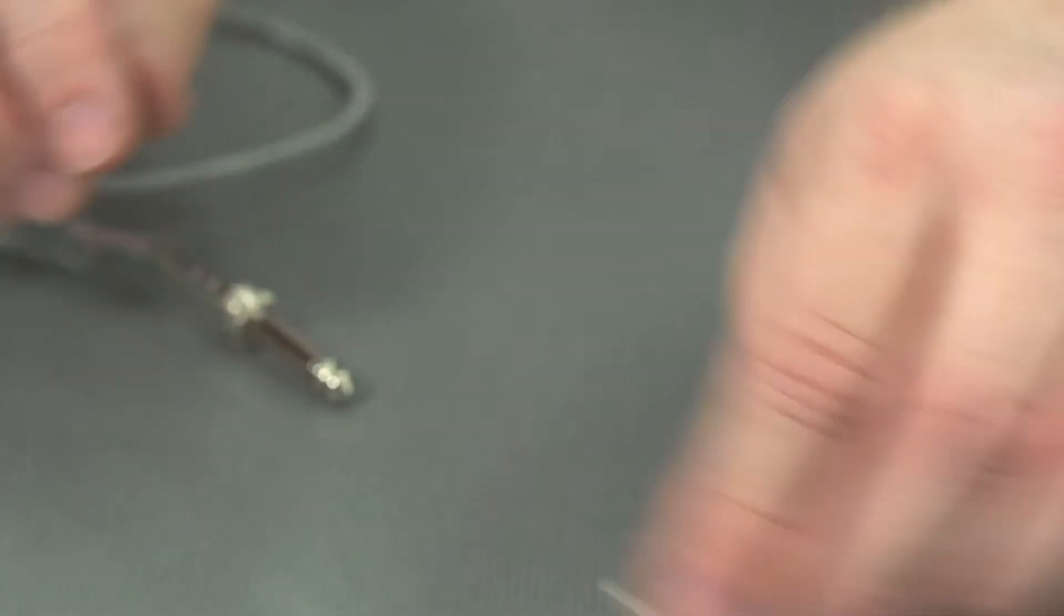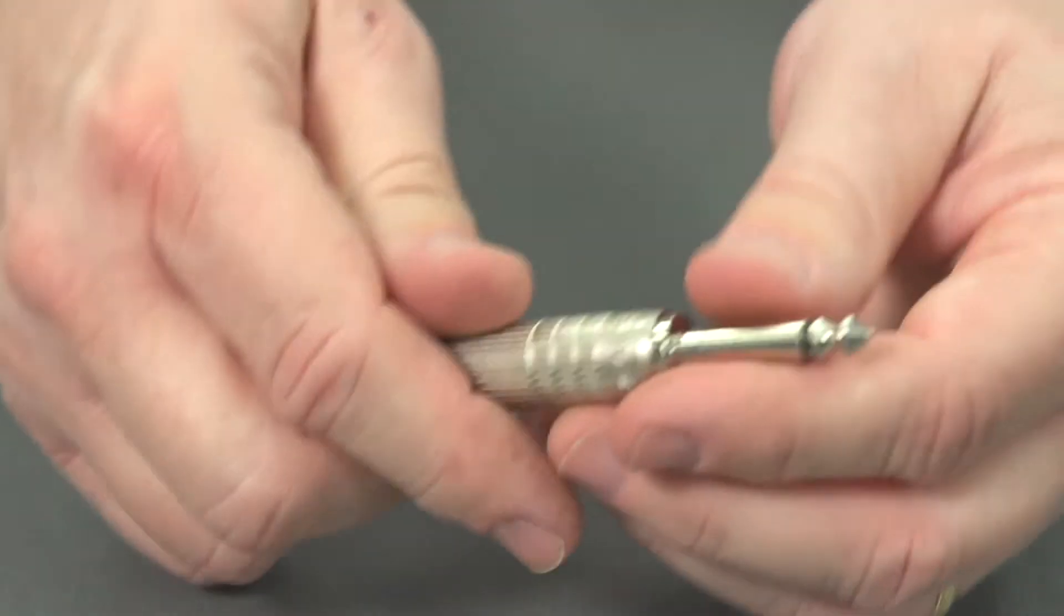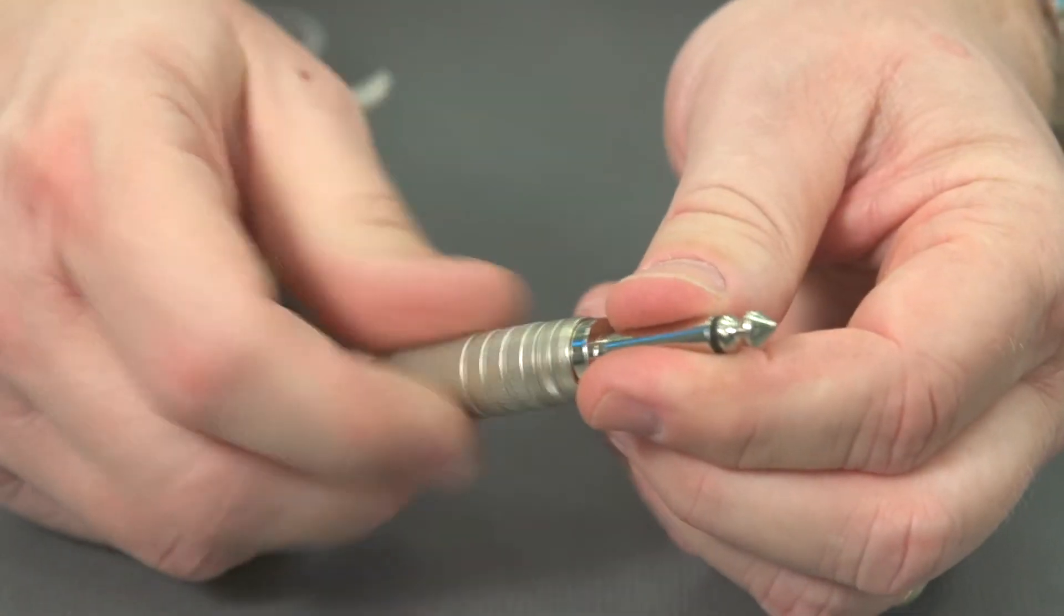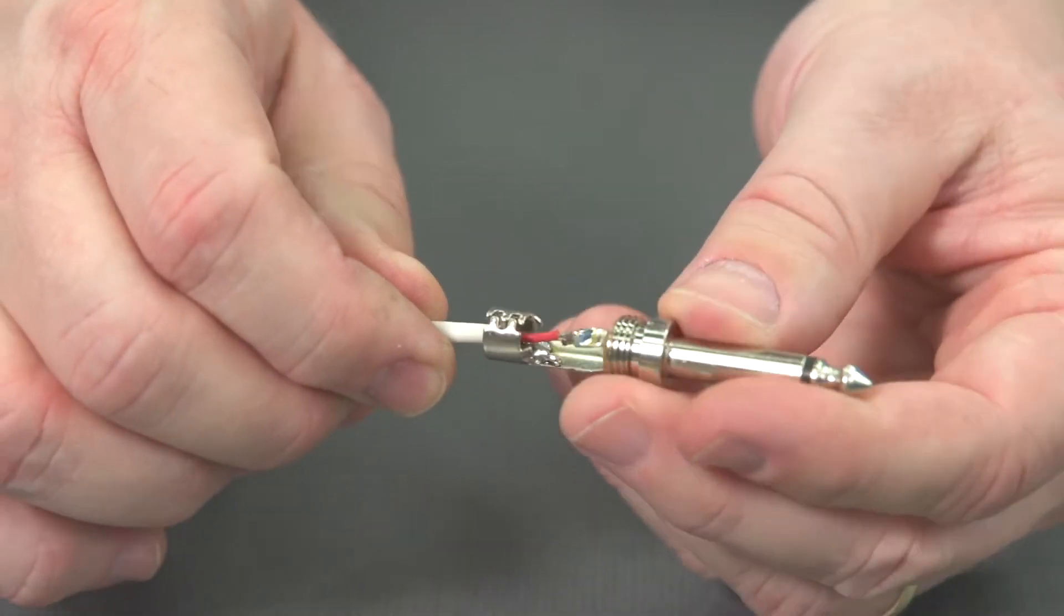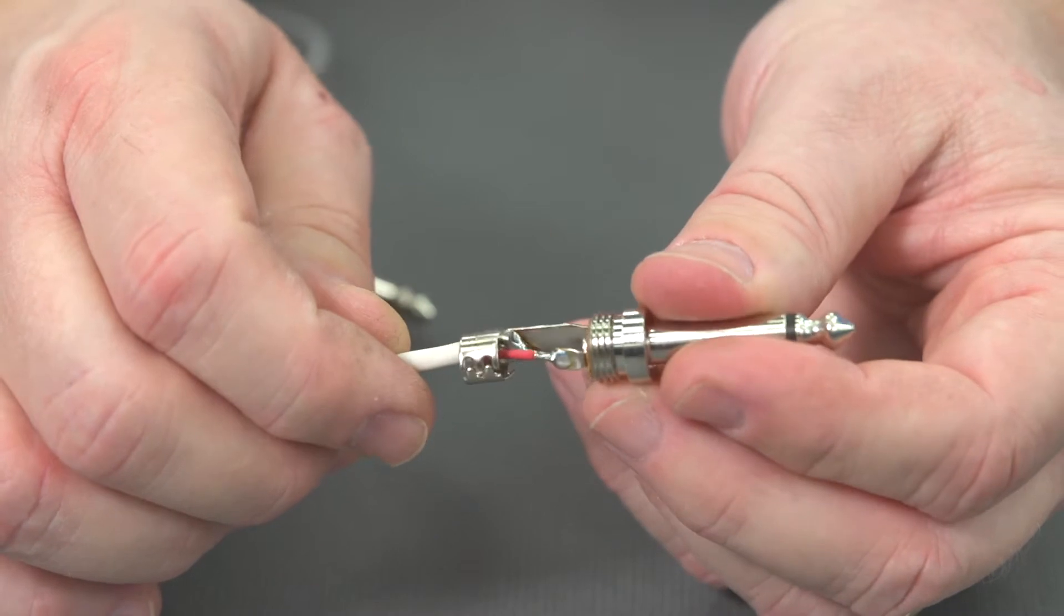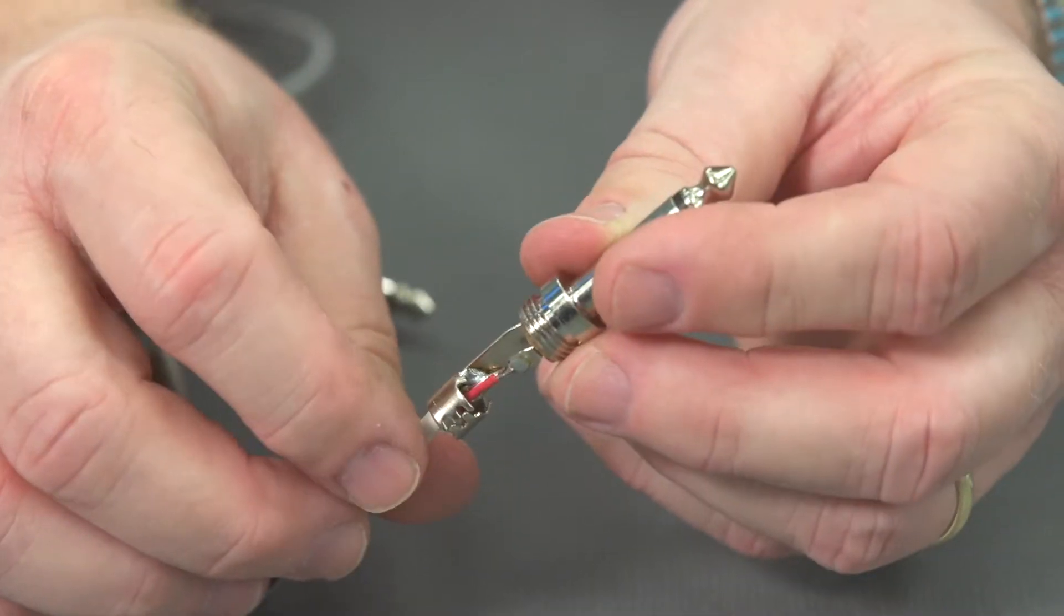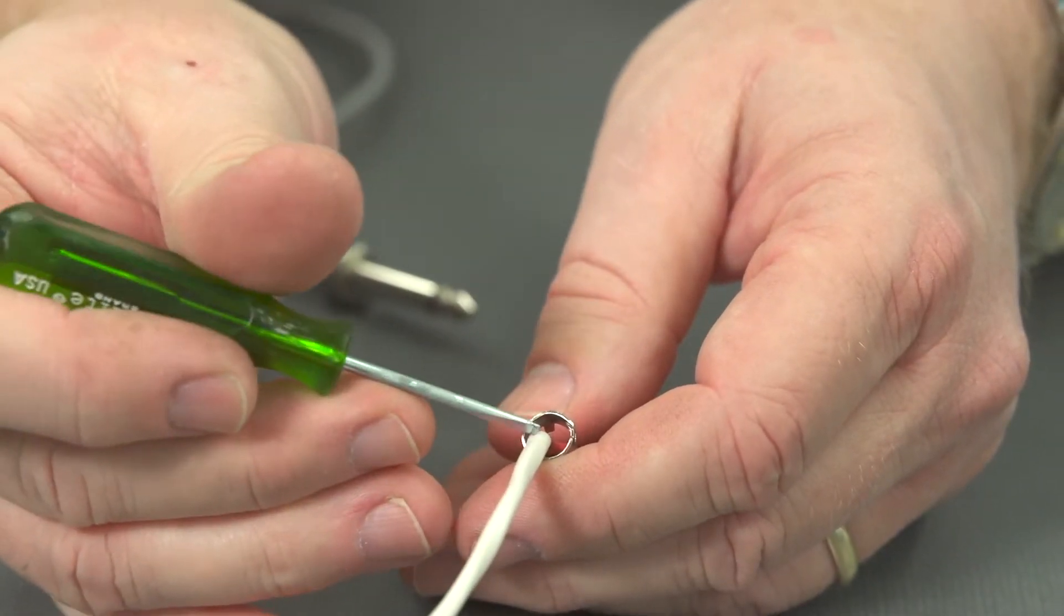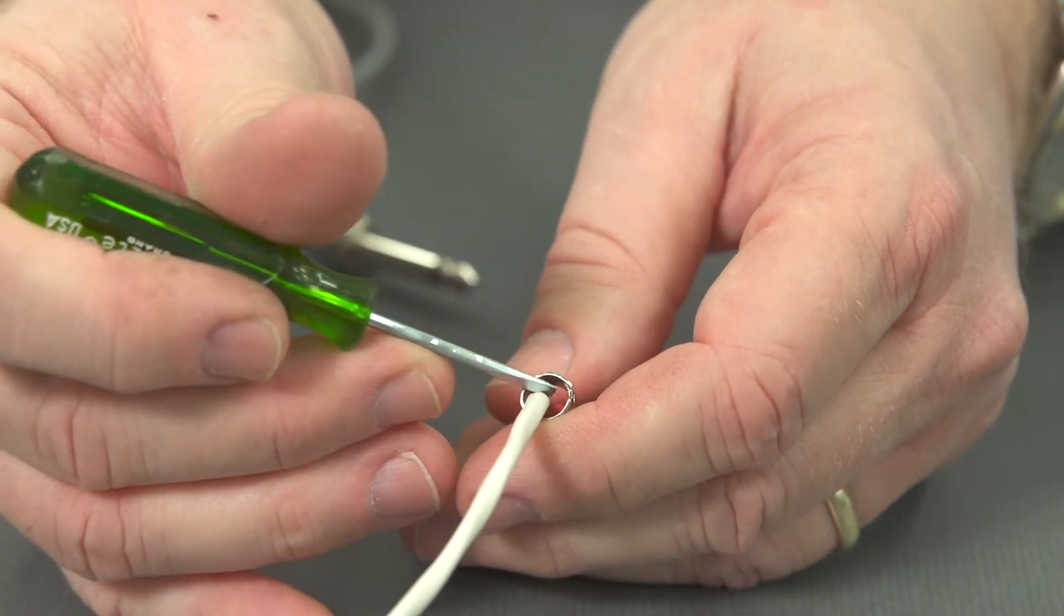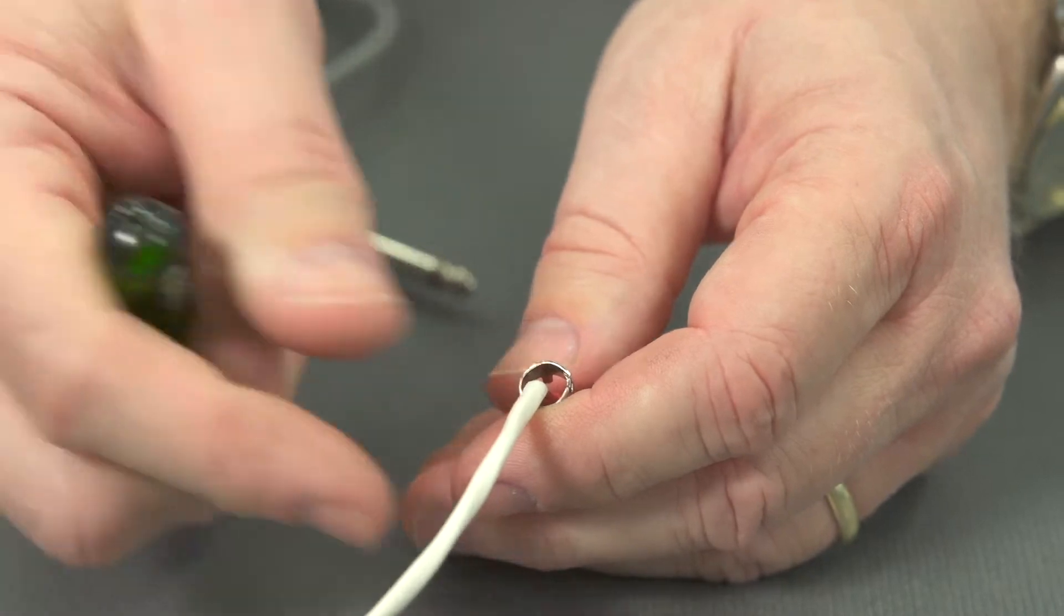Let's take a look at a couple of others here and see what we can find. Here's a tip sleeve quarter. Here's another one where really is there any strain relief on this?